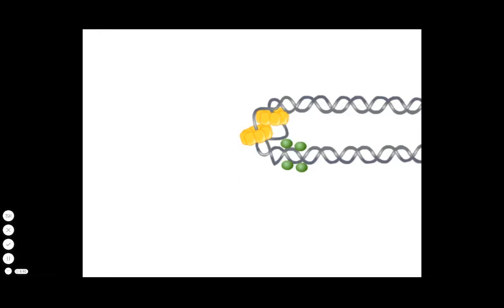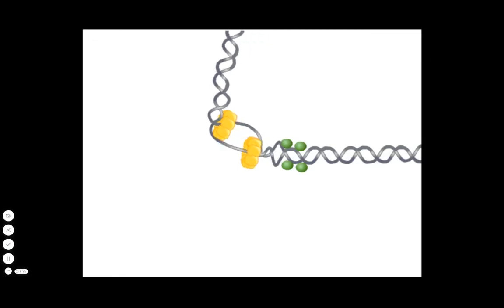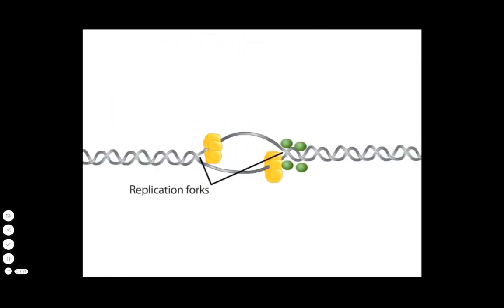The helicases use energy from ATP hydrolysis to unwind the DNA helix at each of the two replication forks.